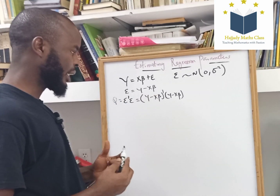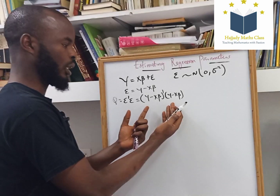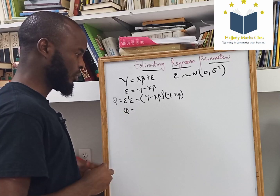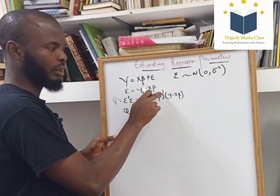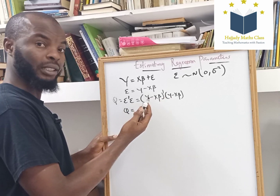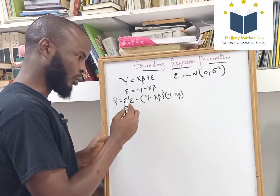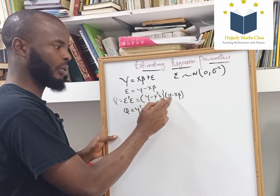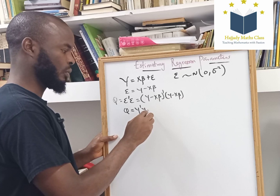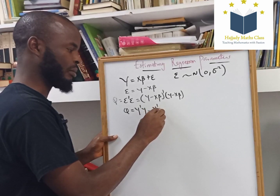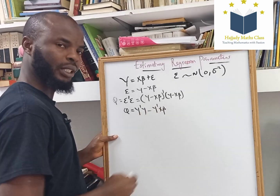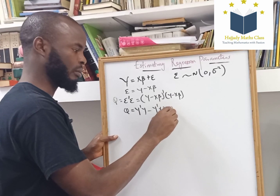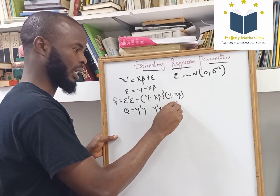So, by so doing, we can distribute. So, we can have Q to be y-prime multiplied by y. Don't forget, this is a matrix multiplication, so we need to be very cautious. We're going to have y-prime y, then negative y-prime Xβ, then x-beta multiplied by y, giving us beta-prime X-prime y.